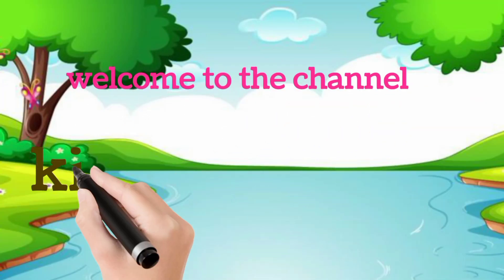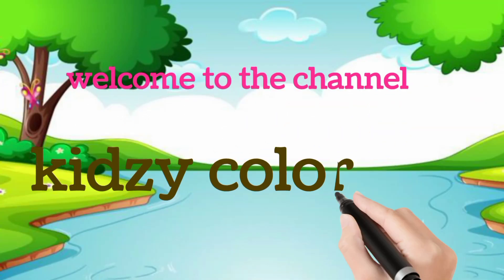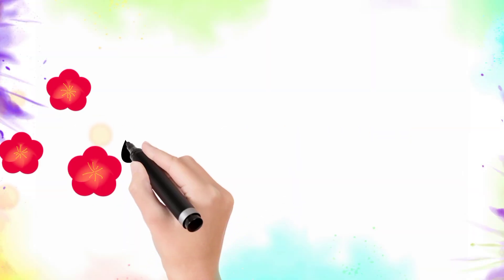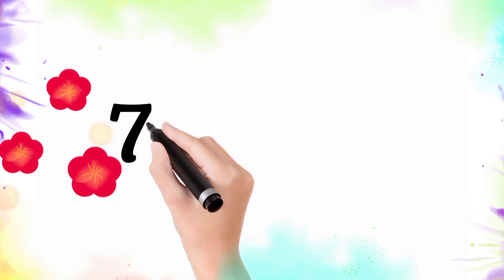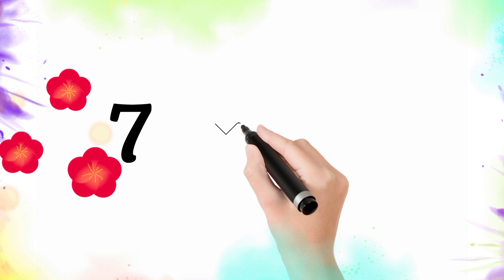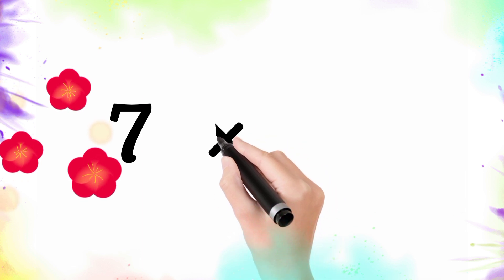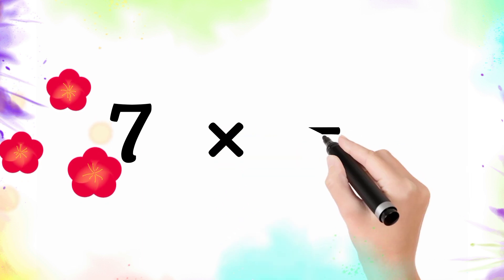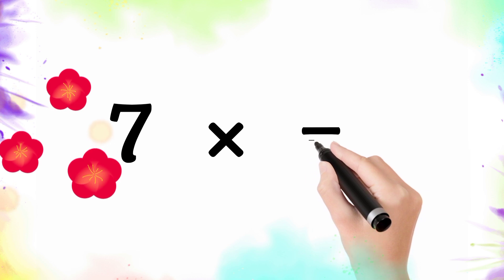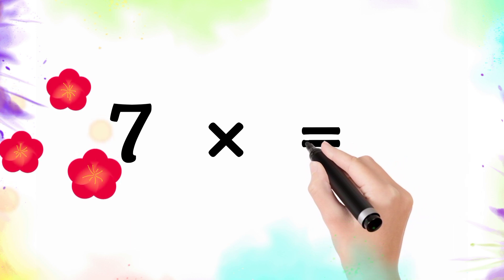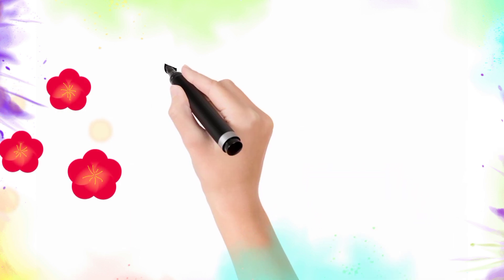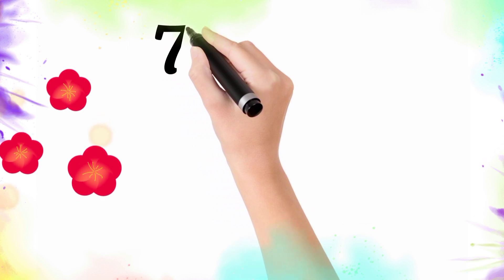Hello kids, welcome to my channel. Today we will learn the table of seven. Now I draw a seven. This is multiplication — we also call it multiply. Now I draw an equal sign. So let's go, table of seven!